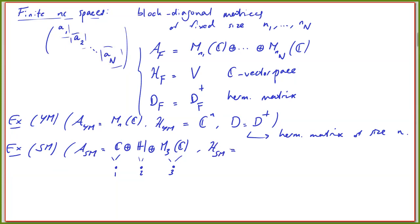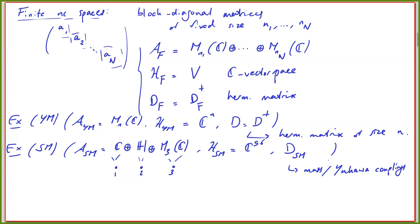The standard model Hilbert space requires counting the fermionic degrees of freedom of the standard model, which is 96. You count particles, antiparticles, left and right chiralities, leptons, quarks in three colors — doing that computation you get to 96. The Dirac operator D is a matrix whose components are the mass or Yukawa couplings of the standard model, packing all the ingredients of the standard model into this spectral triple.